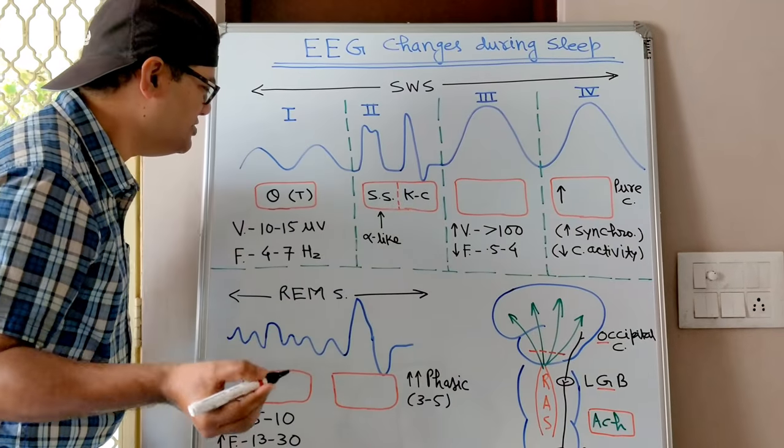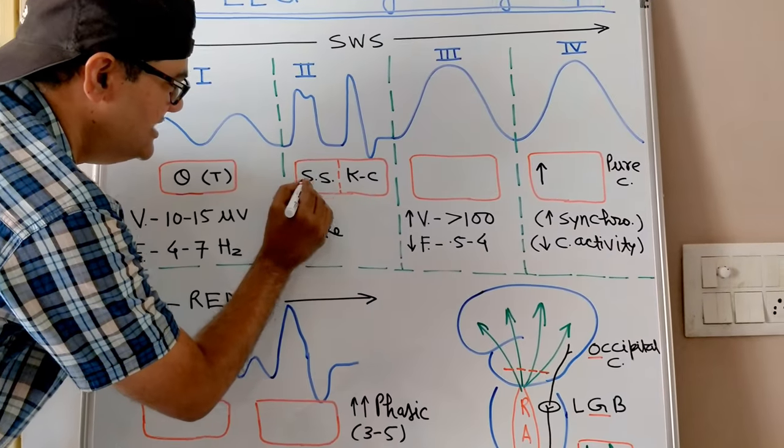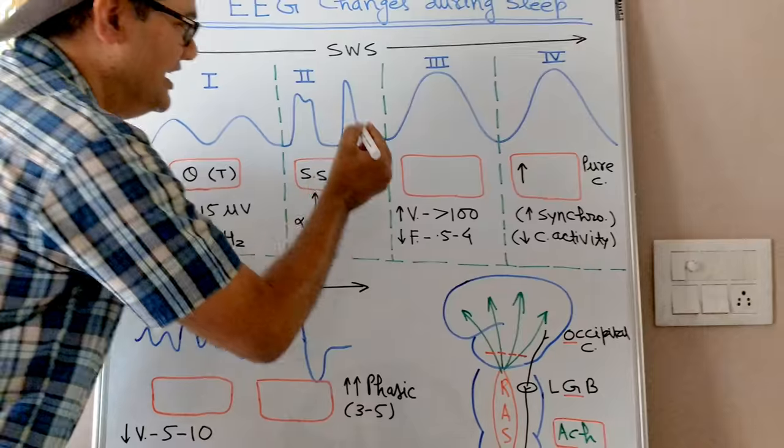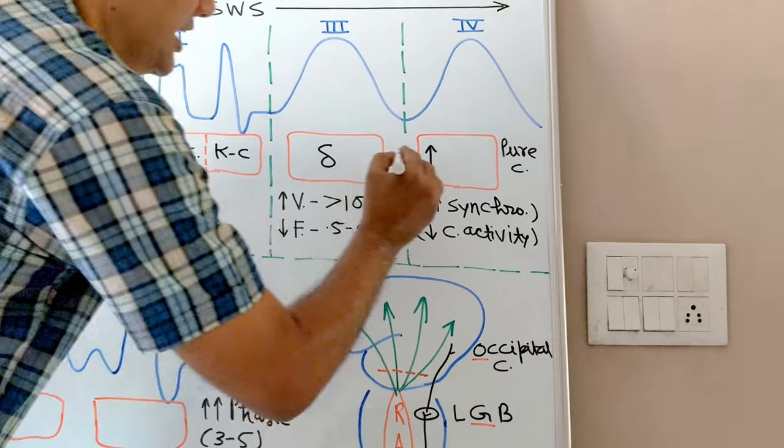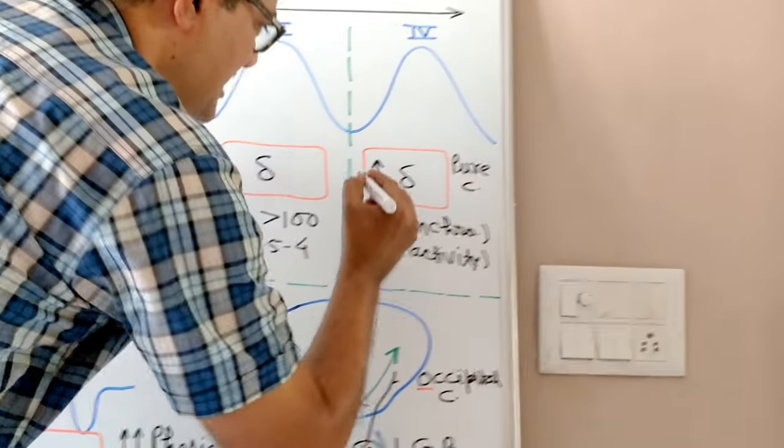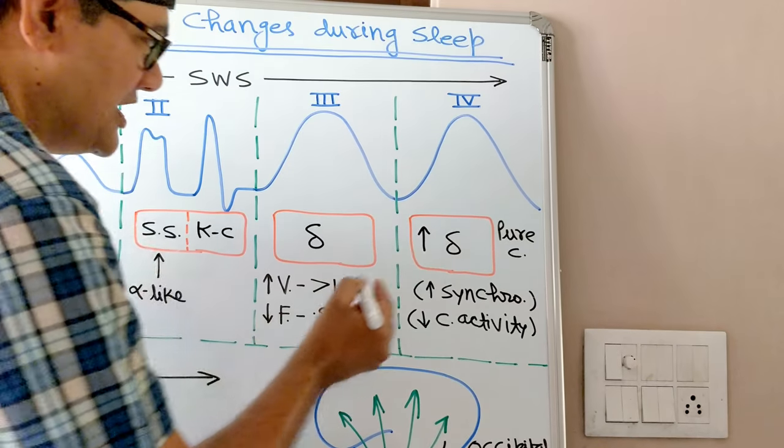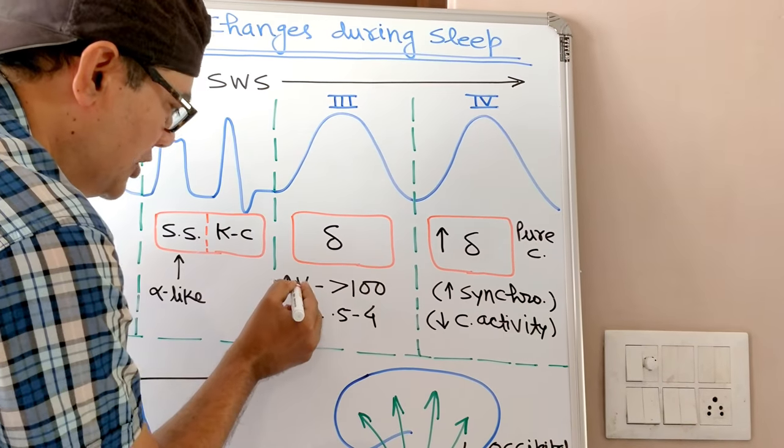sleep is a film, in this film title K bagh, anyway in stage three we are having delta waves and delta waves become more frequent in stage four. Delta waves are pure cortical, high voltage, low